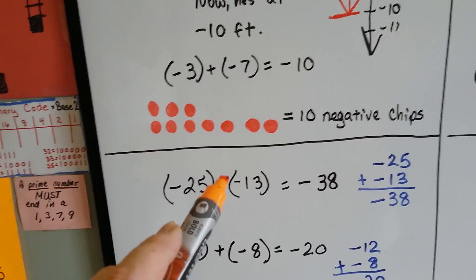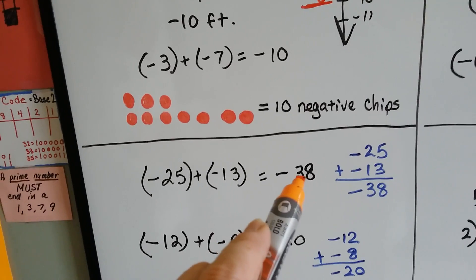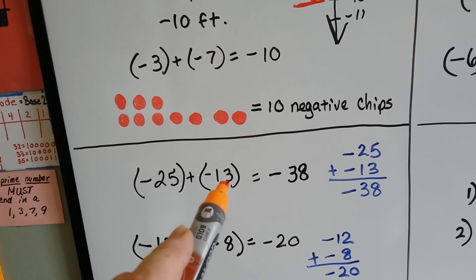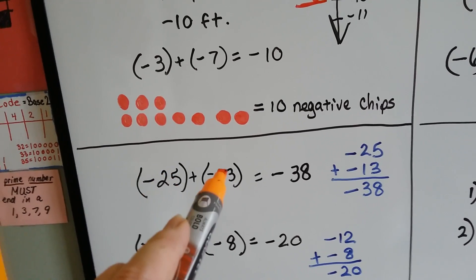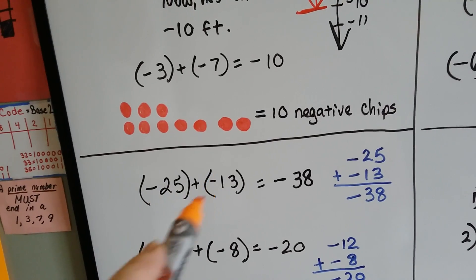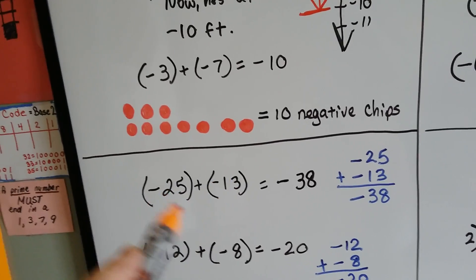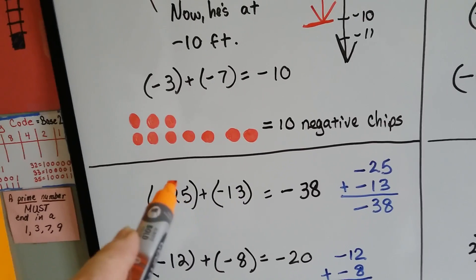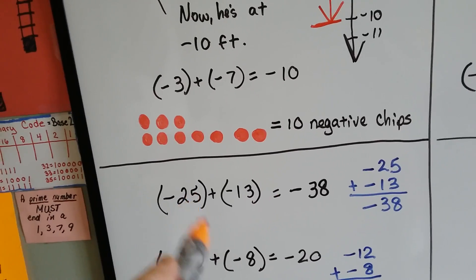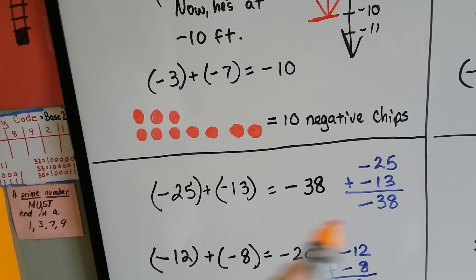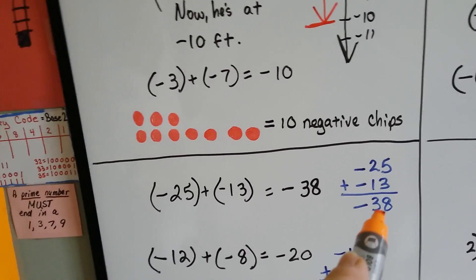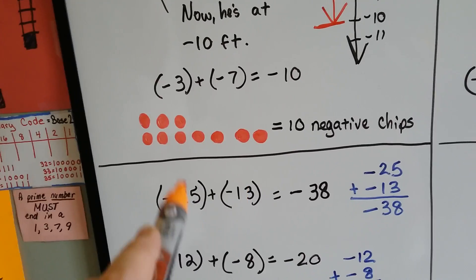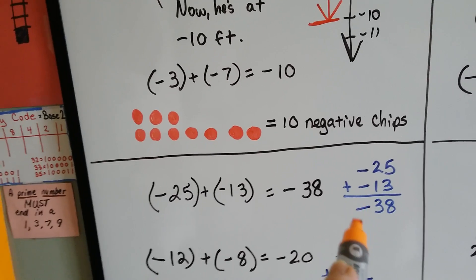Negative 25 plus negative 13 is negative 38. The absolute value of negative 25 is 25, and the absolute value of negative 13 is 13. They both have the same sign, so we add the absolute values together — 25 and 13 — and get 38, and we use the sign they're sharing. So it's negative 38.